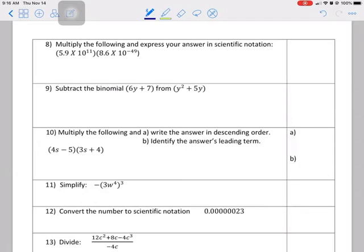All right. Number 8. We need to multiply two terms that are in scientific notation. So it would be 5.9 times 8.6, which turns out to be 50.74. And then we have 10 to the 11 minus 49 is 10 to the negative 38.